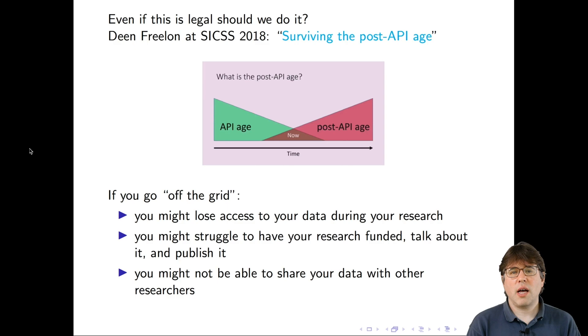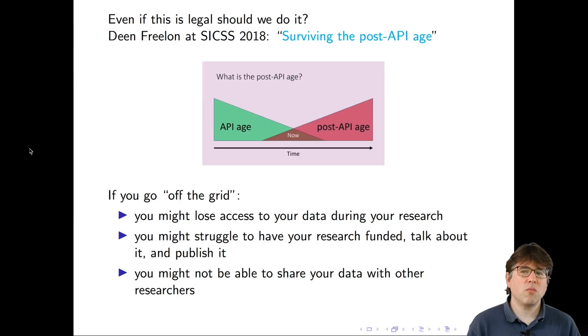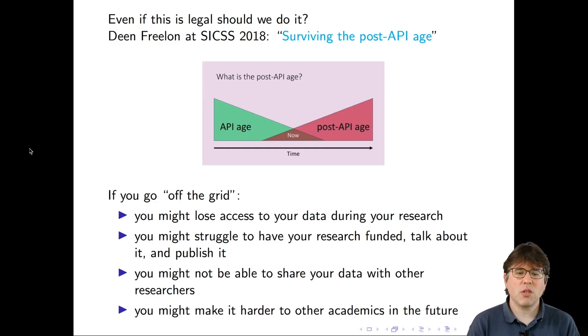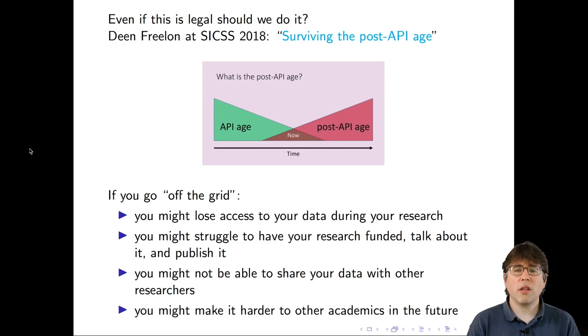If you go off the grid and manage to get through those hurdles, you might not be able to share your data with other researchers. There's a growing movement toward open and reproducible research, and if your data was acquired through gray means, sharing it could lead to other problems. Going off the grid and causing problems may also make it harder for future academics to access APIs. Although some research like MapWatch does explicitly violate terms of service, there are real risks to going off the grid, so consider it carefully and talk to colleagues.